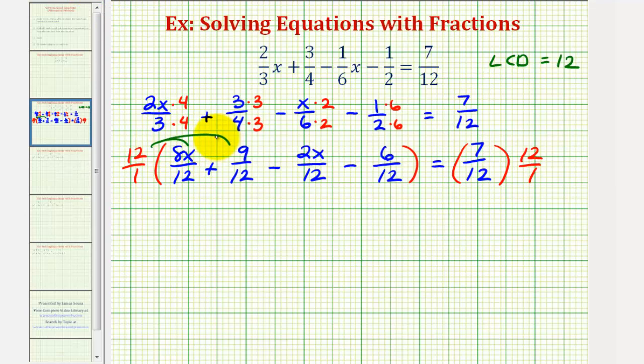So we'll have 1, 2, 3, 4 products. And our first product would just be 8x, because 12 over 12 simplifies to 1, so we have 8x. The second product would just be 9, so plus 9. The third product would be minus 2x. And the fourth product would just be minus 6. And on the right side, we just have 7.